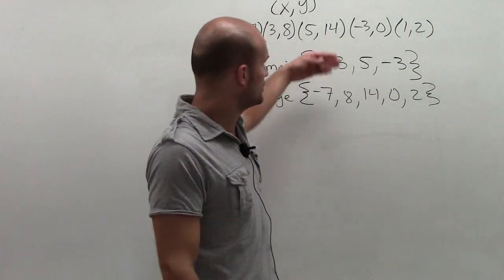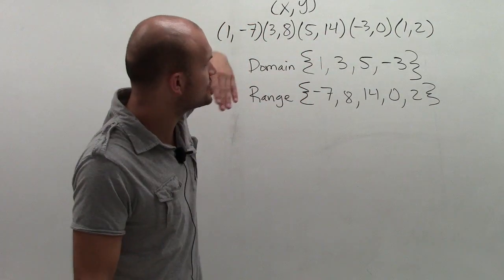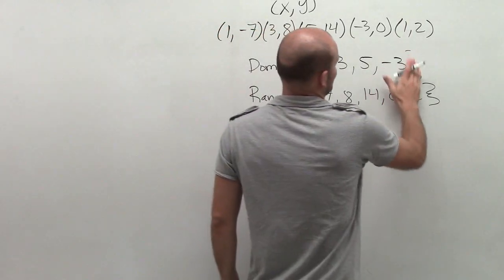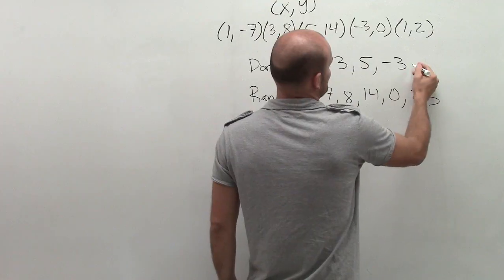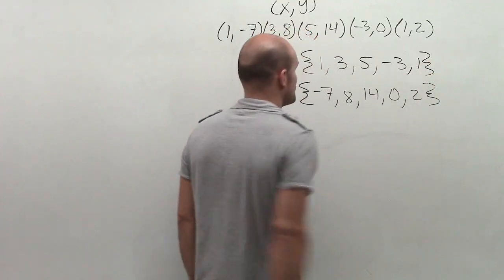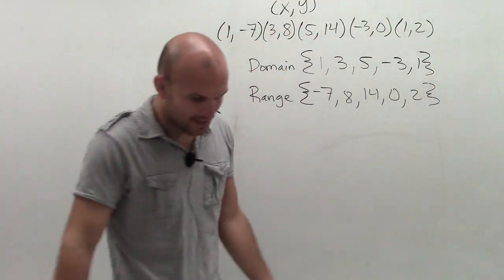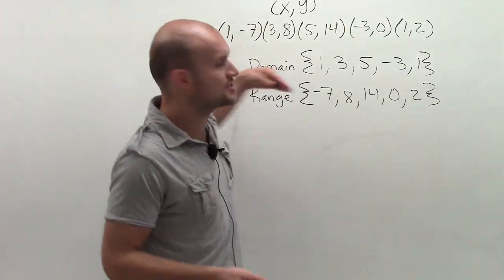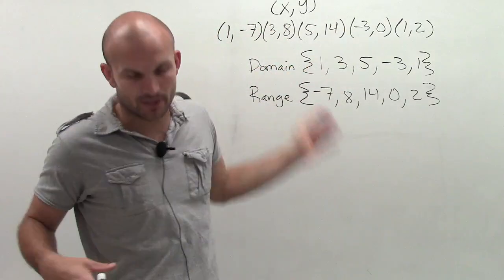So when looking at my domain and range, it might be helpful to write the extra version of this, so I can explain it a little bit better. So let's write 1, since it happens twice. Domain is all your x values, range is all your y values, or all your input and all your output.